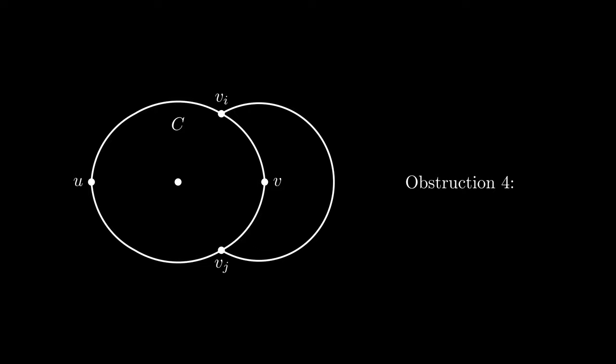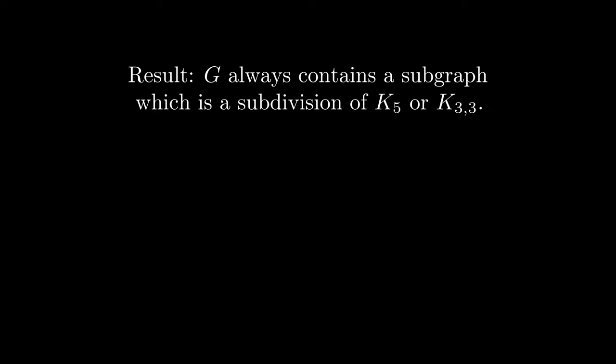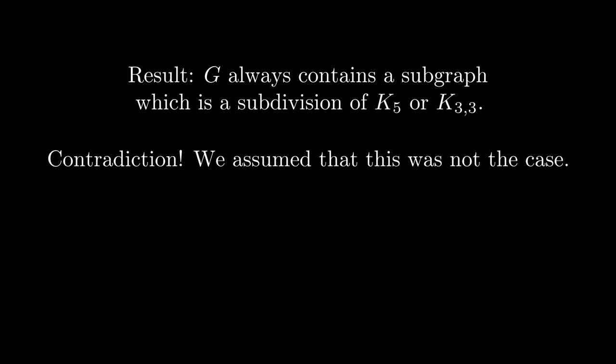Now the fourth obstruction looks like this. This structure actually gives a subdivision of K5. In all of the four cases, the result is a contradiction. We assumed that G contained neither of the two graphs. With this, we are left to conclude that there are no nonplanar graphs like G. This proves the theorem.